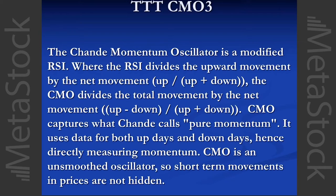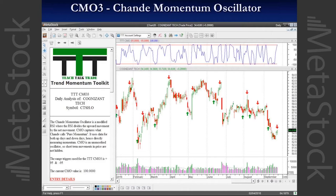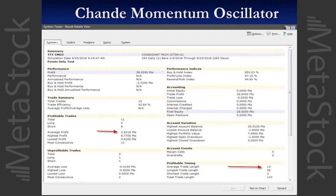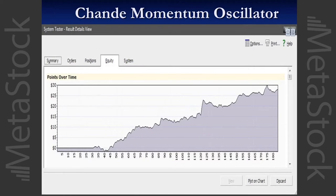The Chande Momentum system — the RSI divides the upward movement by the net movement. It's based on the Chande Momentum Oscillator and looks for short-term price movements that are not hidden and unsmoothed. On the chart you can see the trades that are generated going forward. There are five momentum systems total. Here's 28 points and an average profit of 2.62 points per trade, and there's the nice equity curve.